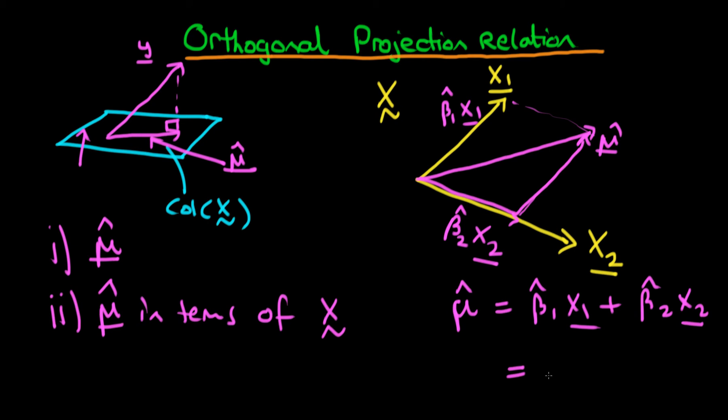If we were to write this more compactly, we can write this as X, where X contains both X1 and X2 as its columns, times beta hat, where beta hat now is a 2 by 1 vector of the least squares estimates of the parameter vector beta.